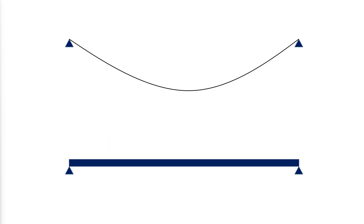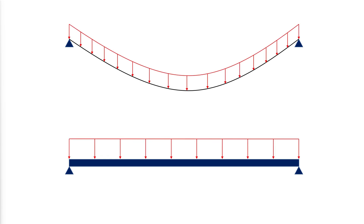When comparing a beam and a cable carrying transverse load, a pronounced difference applies to the supporting conditions. A horizontal beam under vertical load will only require vertical supports at the ends, whereas the corresponding cable will have to be supported both vertically and horizontally at the ends. And in most cases, the horizontal reactions will have to be substantially larger than the vertical reactions.